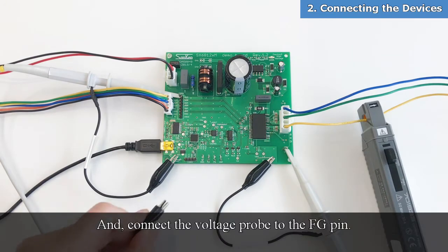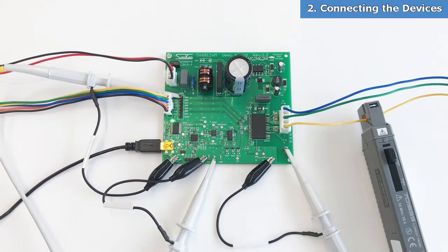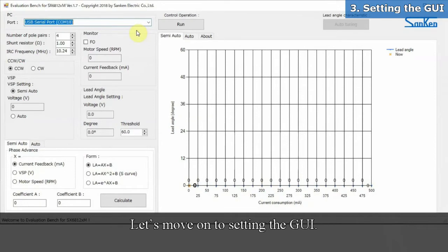And connect the voltage probe to the FG pin. Let's move on to setting the GUI.